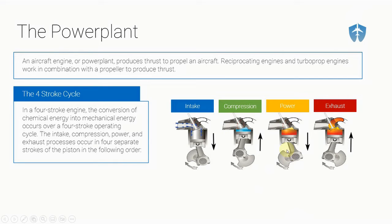In the power stroke, you can either have compression ignition — where the mixture is compressed really hard and you get the explosion — or you can have a spark plug, maybe right here on the cylinder, that causes the spark and gives you the power. Once that explosion happens in the power stroke, it forces the piston back down, turns the crankshaft, and starts to turn the propeller.